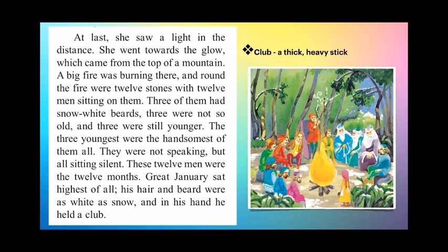As Marukkala was walking aimlessly in the forest, she finally saw light at some distance and started walking towards it. This light was coming from the top of a mountain where a big fire was burning. Around the fire were twelve men sitting — these were the twelve months. Great January was the leader, sitting at the highest place with a club in his hand. He is described as having hair and beard as white as snow.